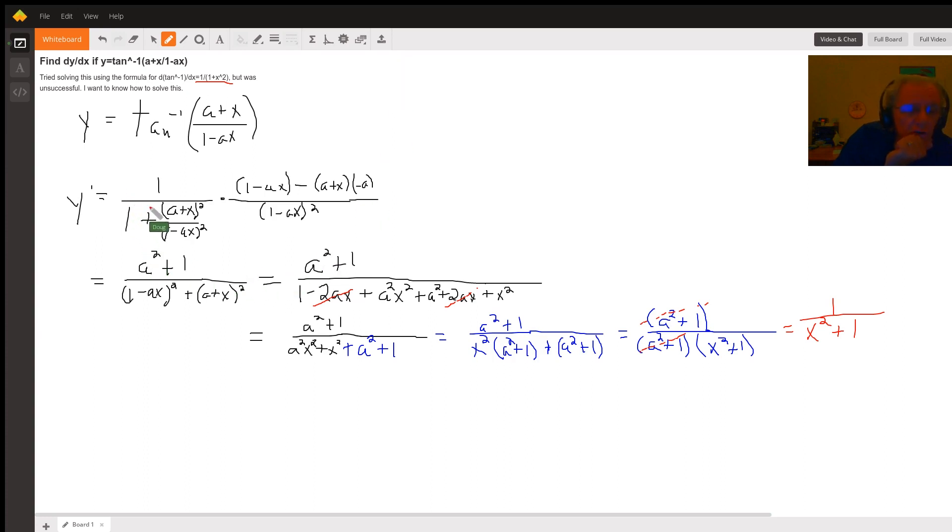So here I've shown that I've done the first part, 1 plus the parameter of the inverse tangent function squared, where I've separated the numerator and denominator into two separate quantities squared, and you'll see why in a minute.